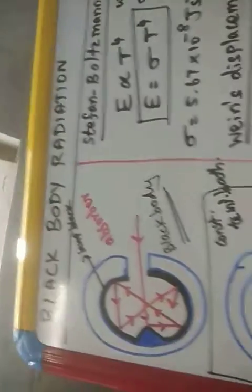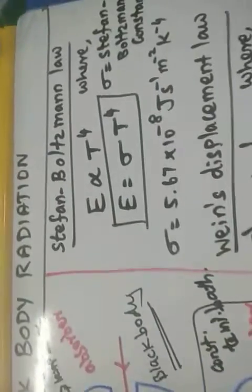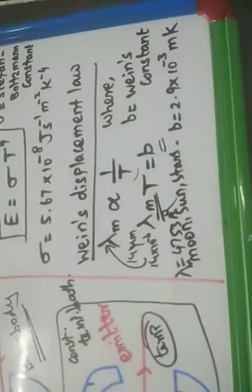So to summarize: black body radiation — what is a perfect black body, Stefan-Boltzmann's law, and Wien's displacement law.